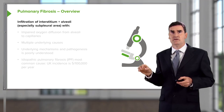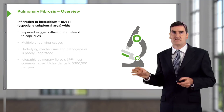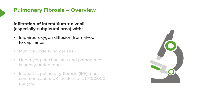This infiltration of the alveoli with extra material makes oxygen diffusion from the alveolus into the pulmonary capillary much slower. So uptake of oxygen, as measured by a transfer factor, will be reduced in pulmonary fibrosis.